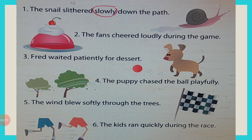Now read sentence number three: Fred waited patiently for dessert. Fred the boy waited for dessert. Waited is a verb. How did he wait? Patiently. Patiently means calmly or quietly.